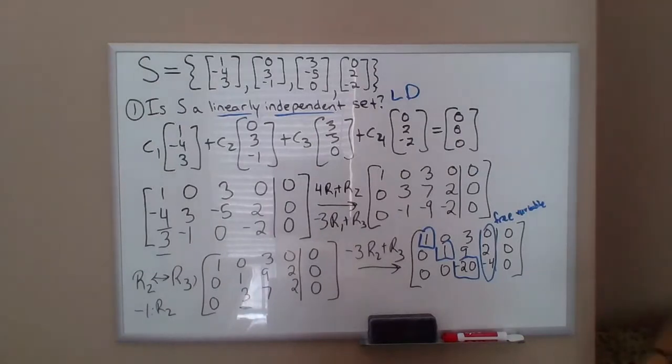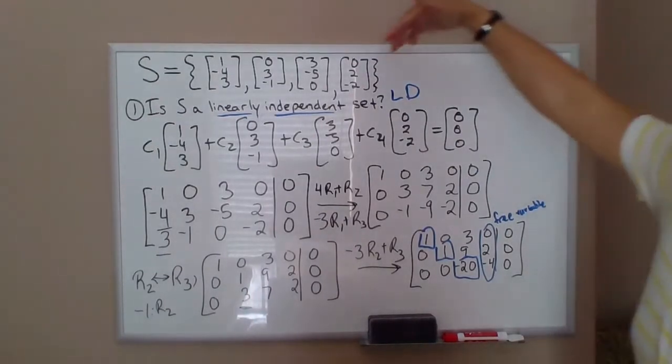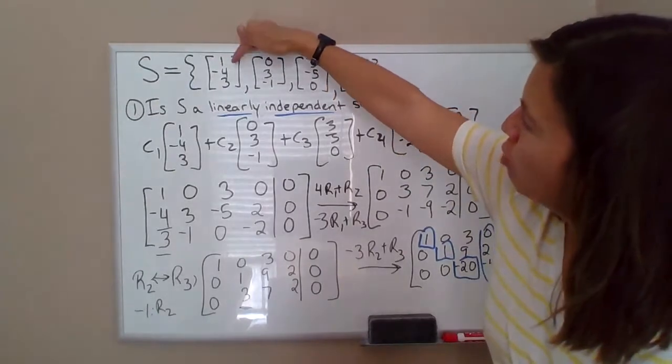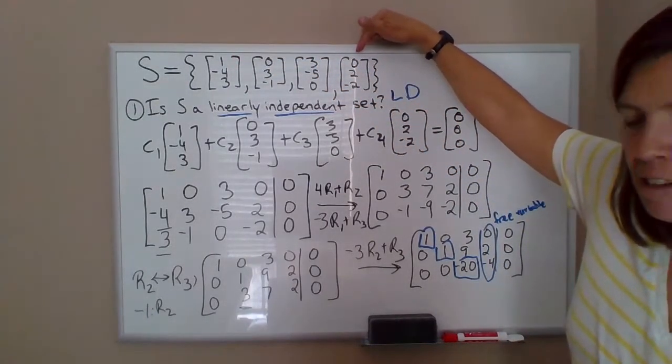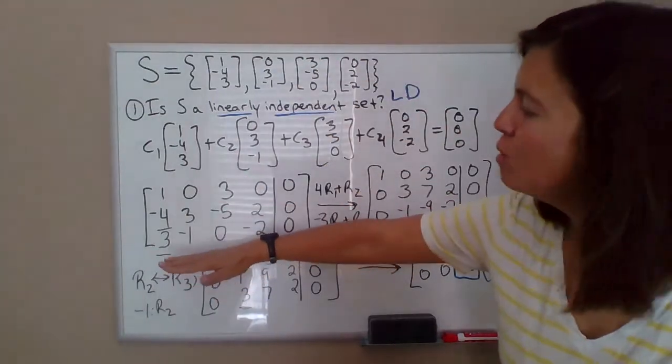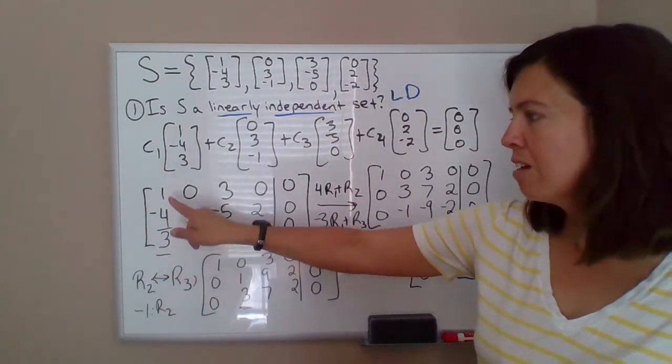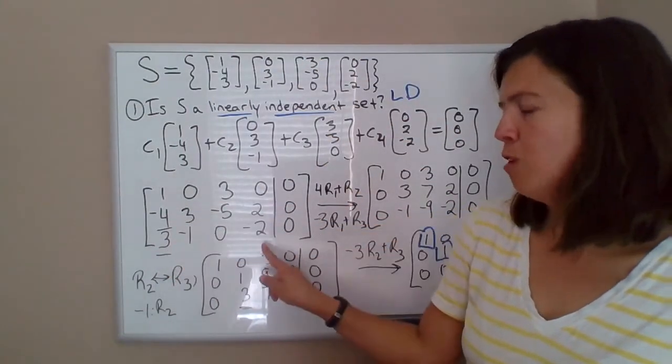Now that we did all that, maybe you remember, if there are three entries and we have more than three vectors, then it's guaranteed to be linearly dependent, because as soon as we set this up, we could have realized, I'm going to run out of rows before I run out of columns.